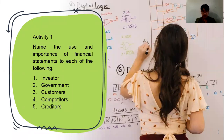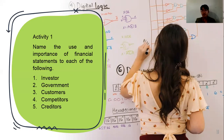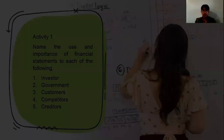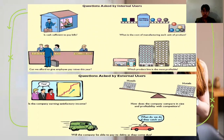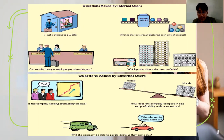An activity is prepared: name the use and importance of financial statements to each of the following — investor, government, customer, credit competitors, and creditors. For more information, these are questions asked by internal users: Is there sufficient cash to pay bills? Can we afford to give employee pay raises this year? Which product line is the most profitable? What is the cost of manufacturing each unit of product?